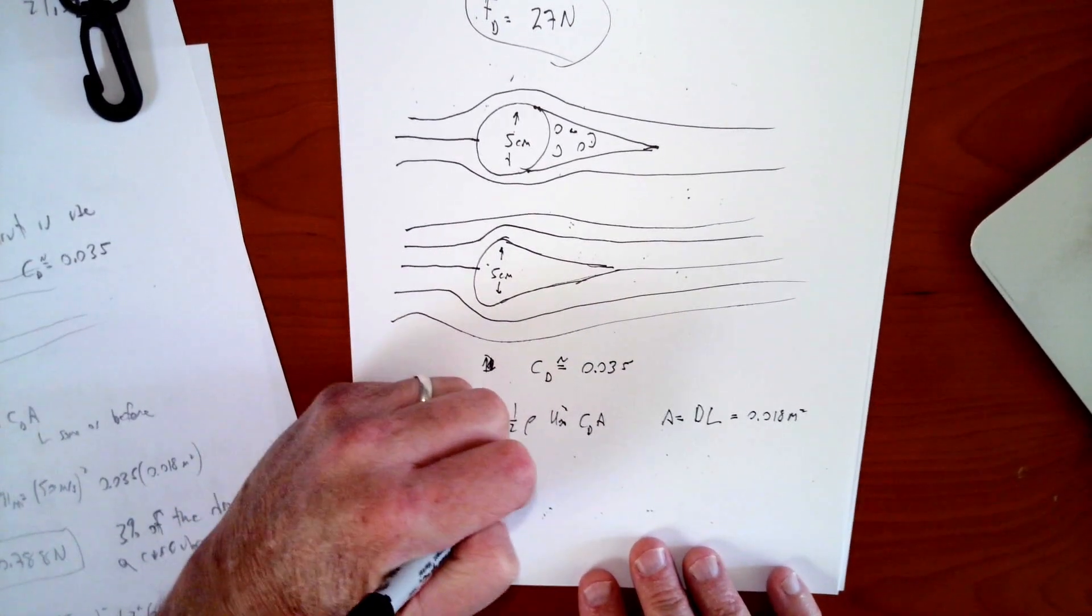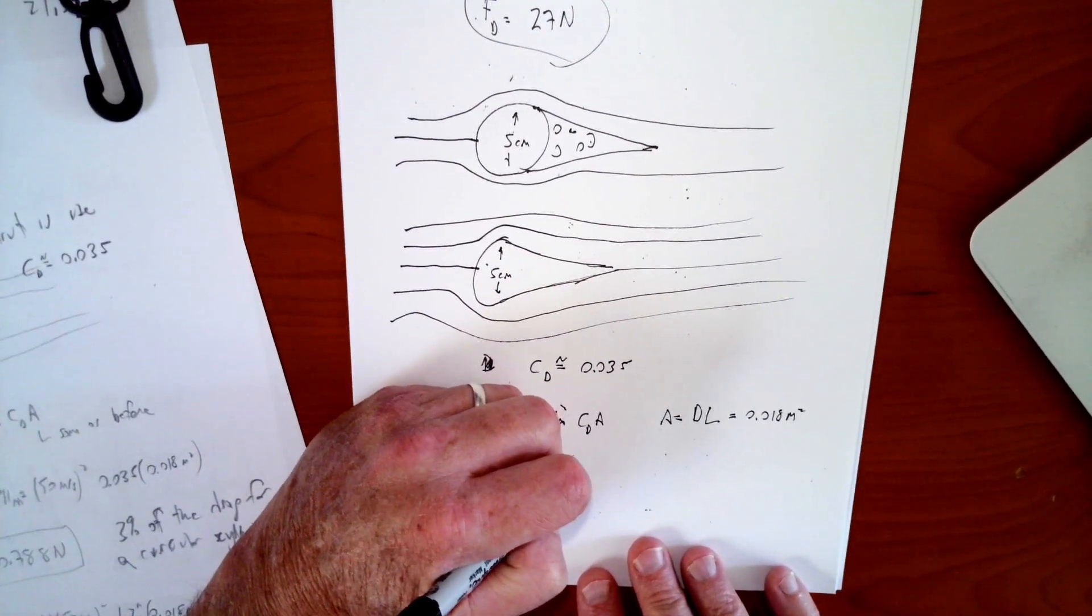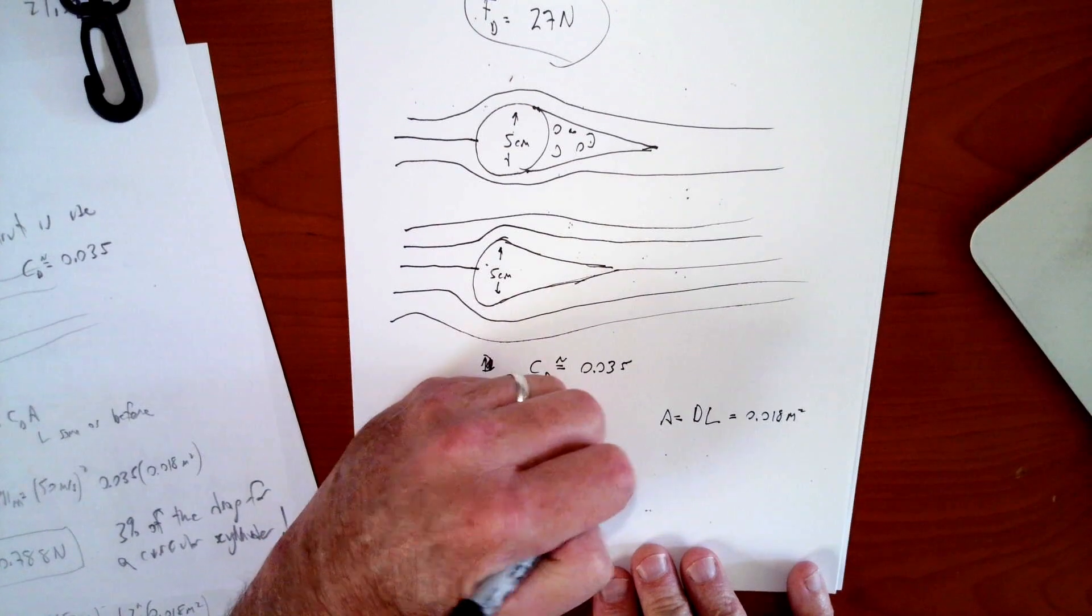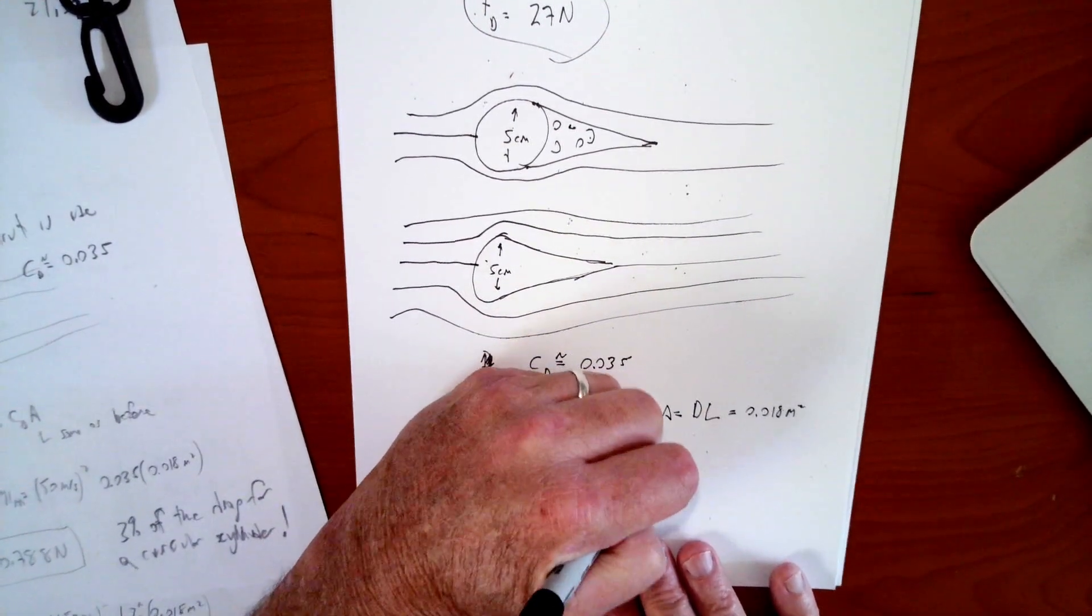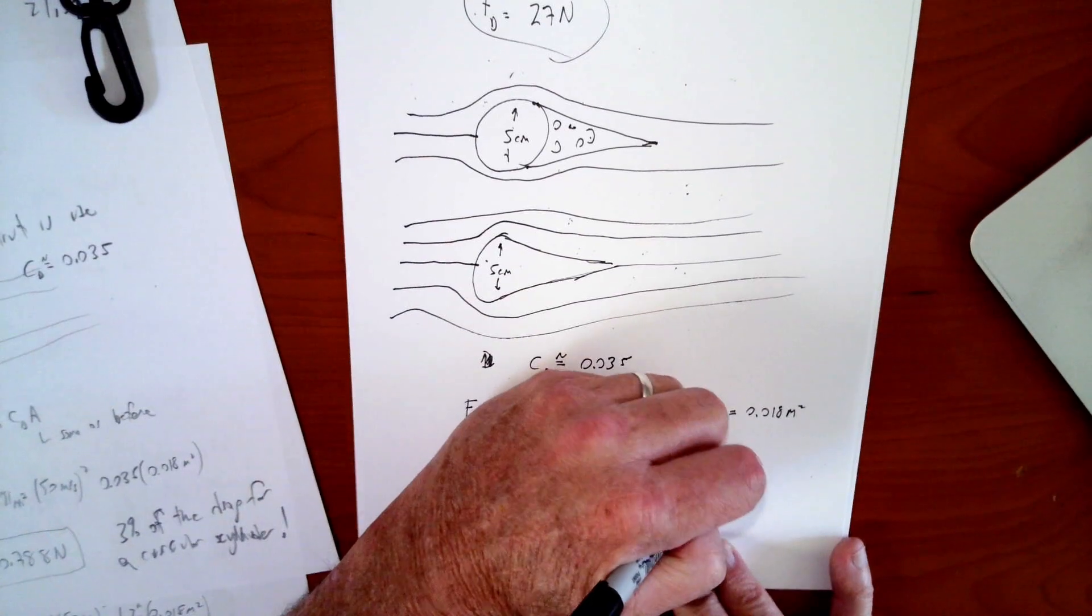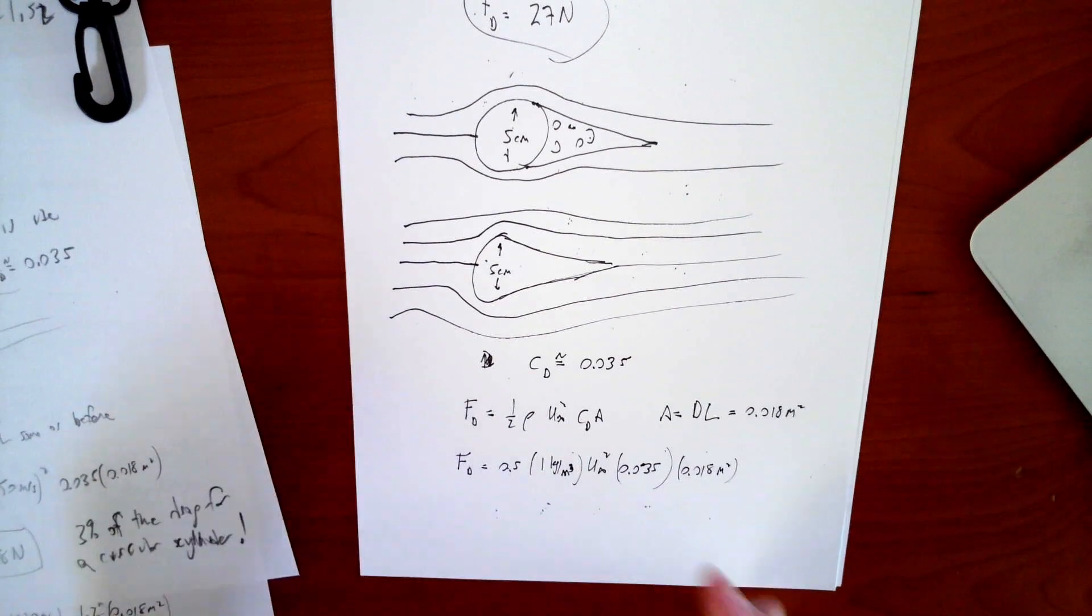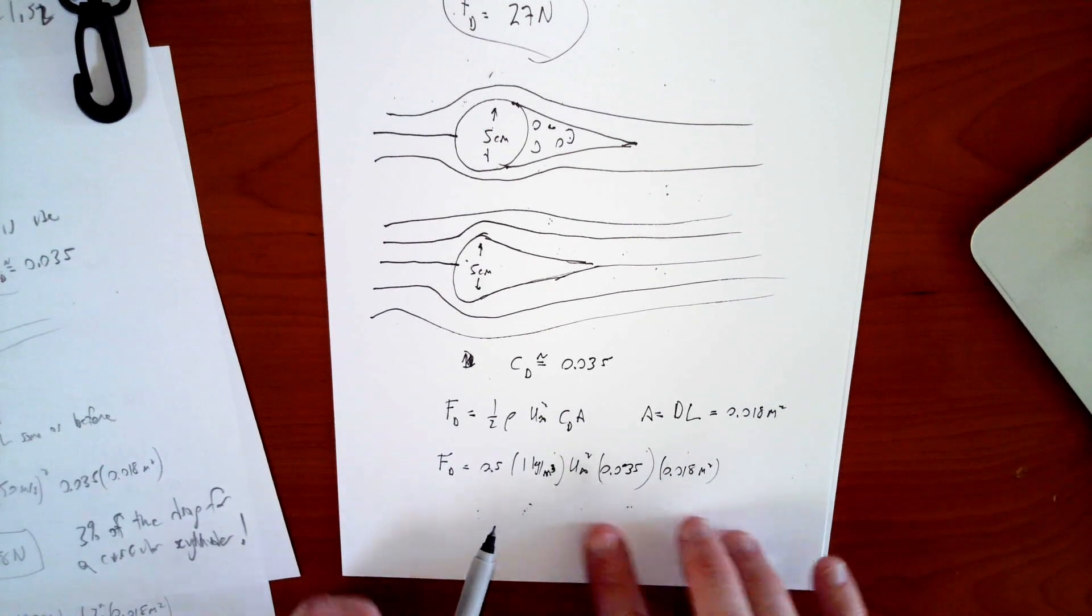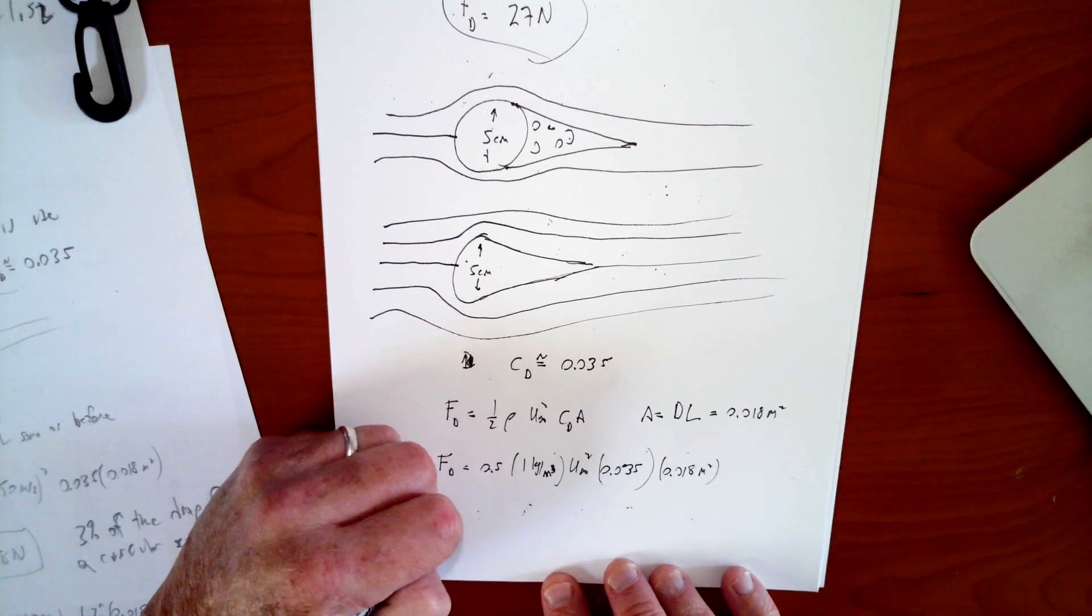So the only thing that has changed is the drag coefficient. So 0.5, 1 kilograms per meter cubed. I realized that maybe I should have used the 1.2 kilograms per meter cubed for air, but it doesn't affect our results here. We're looking to compare these two. So it doesn't really matter which one I use, as long as I'm consistent, use the same density for air, and then 0.018 meters squared. But if you're sitting there scratching your head wondering why I'm using one kilogram per meter cubed, it's just because that's about right. I just didn't really care. So that's the answer. So anyway, that's my drag force for this teardrop shaped strut.